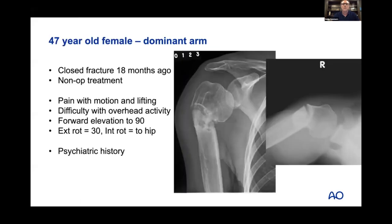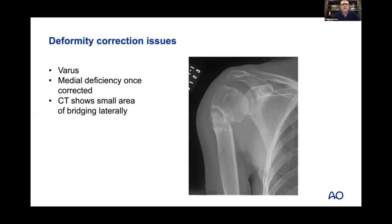Non-union can present special situations. Here's a 47-year-old female, dominant arm, injury 18 months ago, in varus with apex anterior deformity — poor performers that don't heal well either. She has pain with motion and lifting, difficulty with overhead activity, limited forward elevation, and a psychiatric history which is why she's been around for 18 months. She has a varus deformity with apex anterior, and once I correct it she'll have a medial deficiency.